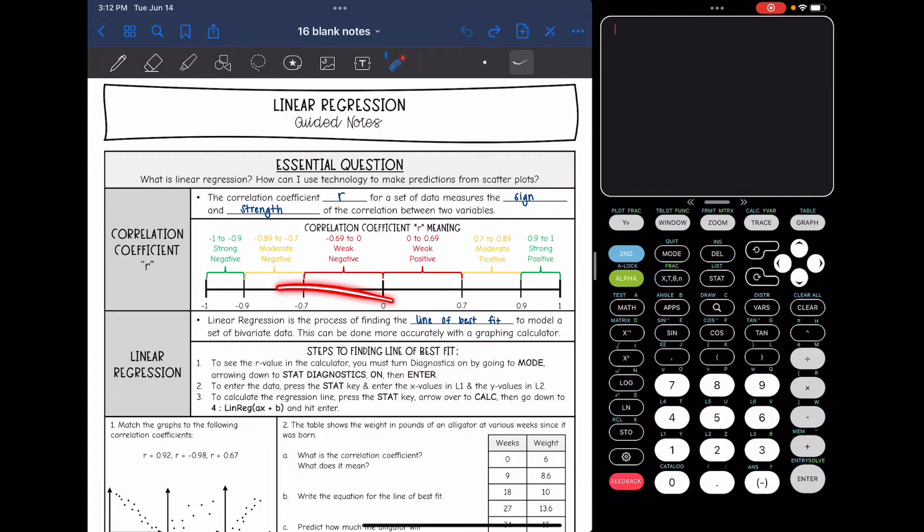If it's a negative number, then the data is going to be trending down, and if it's a positive number, the data is going to be trending up. The closer that you are to negative one or to positive one, the stronger that correlation is.